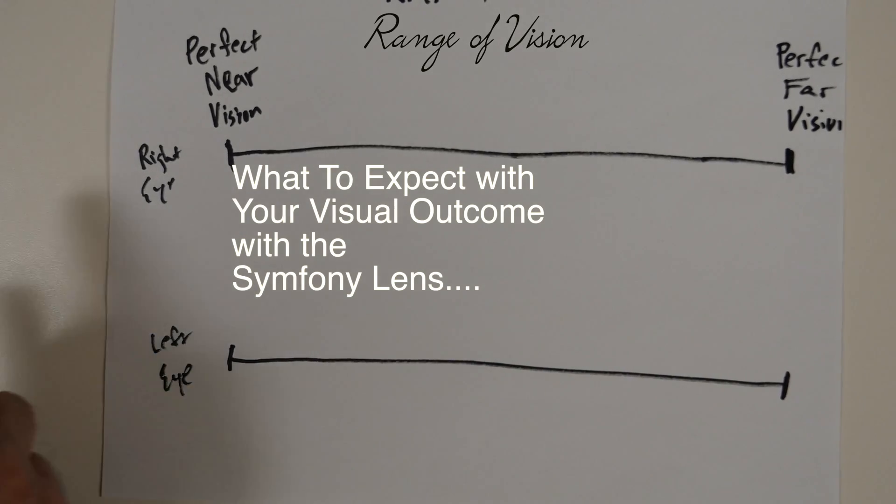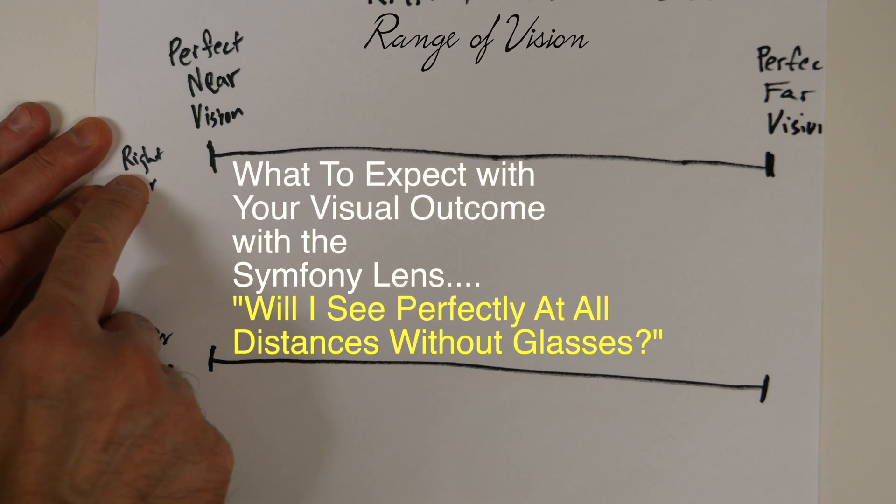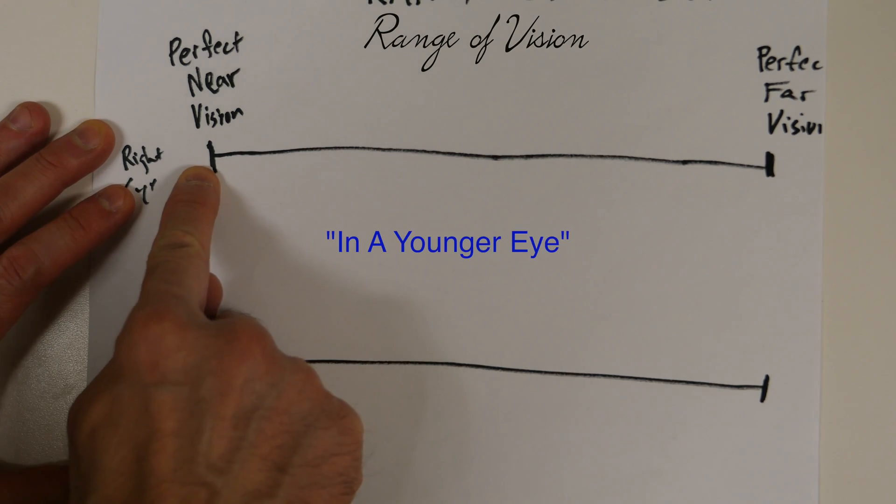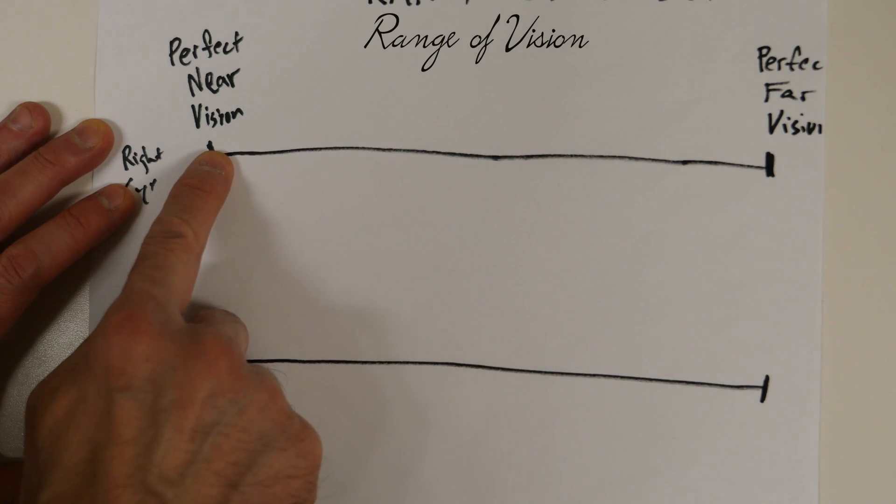Here's the typical conversation. We say everybody wants perfect near and perfect far vision. This is your right eye. This is your left eye. In a perfect world, let's say in a younger eye, a person has perfect far and they can refocus up to near.